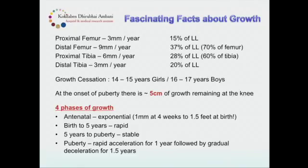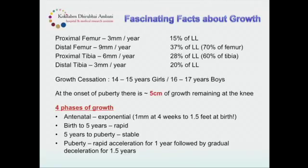The distal tibia contributes about 20 percent. Using chronological age is again inaccurate — though we talk of age 18 as becoming an adult, from the skeletal point of view by age 14 or 15 almost all growth has ceased in a girl, and by age 16 or 17 entirely in a boy. A good rule of thumb: if a child has attained puberty, we still have around 5 centimeters of growth to play with at the knee. So if the discrepancy is around 5 cm by puberty, you have that 5 cm to work with.